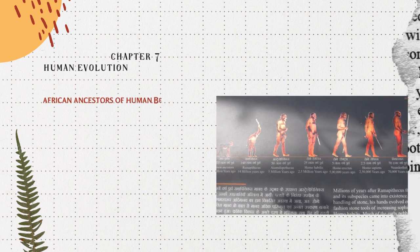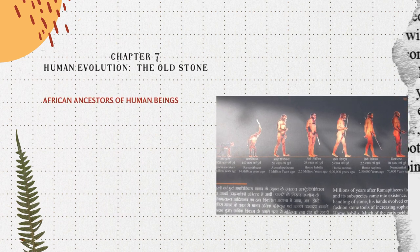Human Evolution – The Old Stone Age: African Ancestors of Human Beings. The Earth is over 4,600 million years old. The evolution of its crust shows four stages. The fourth stage is called the Quaternary. It is divided into two epochs called Pleistocene (Ice Age) and Holocene (Post-Ice Age). The first epoch lasted from 2 million BC to 12,000 BC. The second began in about 12,000 BC and continues to this day.